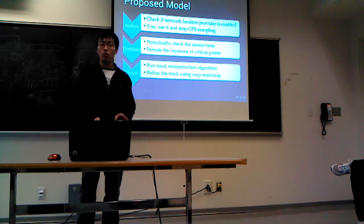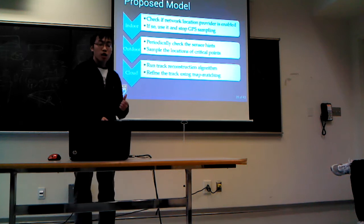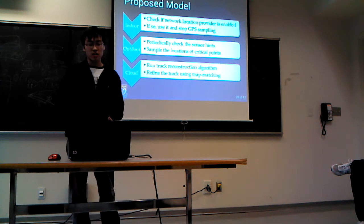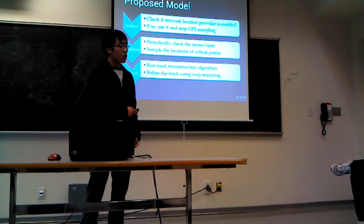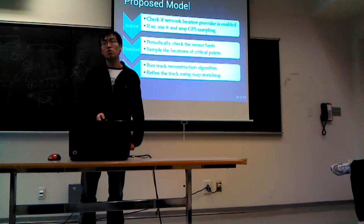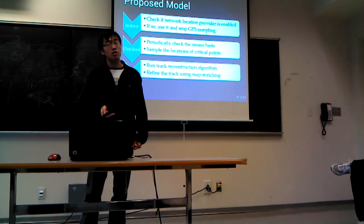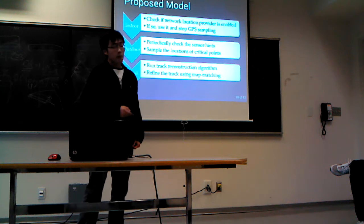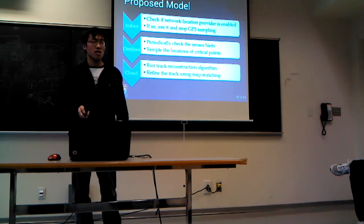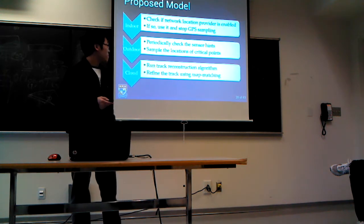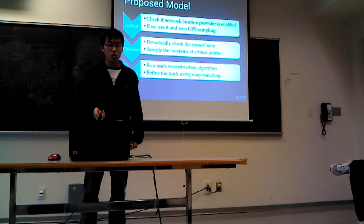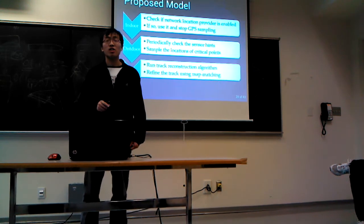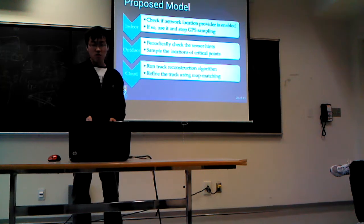The general view of my proposed model: if you are indoors, check for a Wi-Fi connection — if so, use the network-based location provider and stop GPS sampling. If you are outdoors, periodically check the sensor state, use hints to identify critical waypoints, and sample those locations. Once you have the critical point locations, a track reconstruction process is performed — potentially on the cloud. The reconstruction algorithm is part of my ongoing work, and the last step is map matching against a pre-defined map to refine the track.